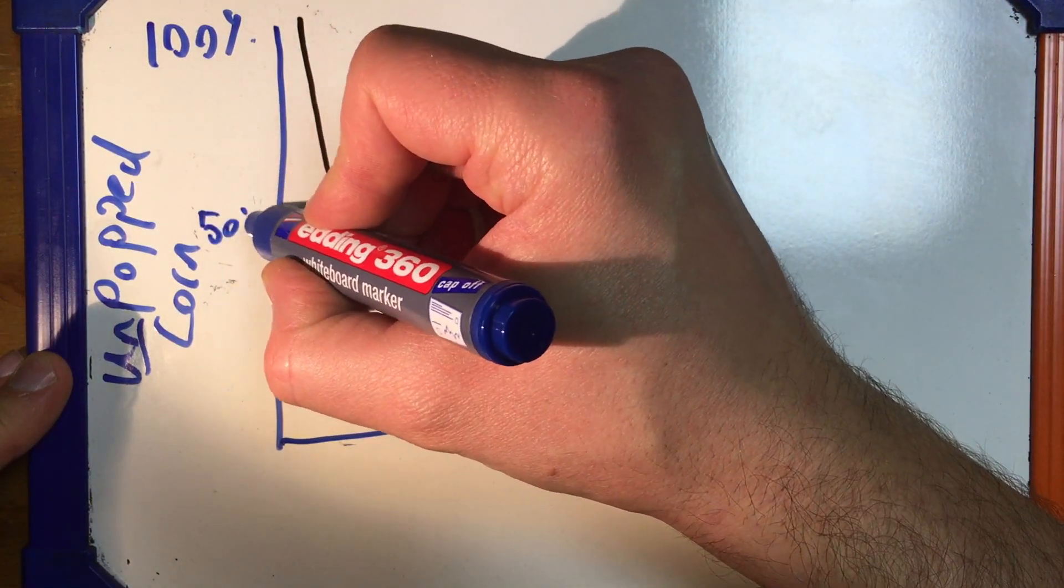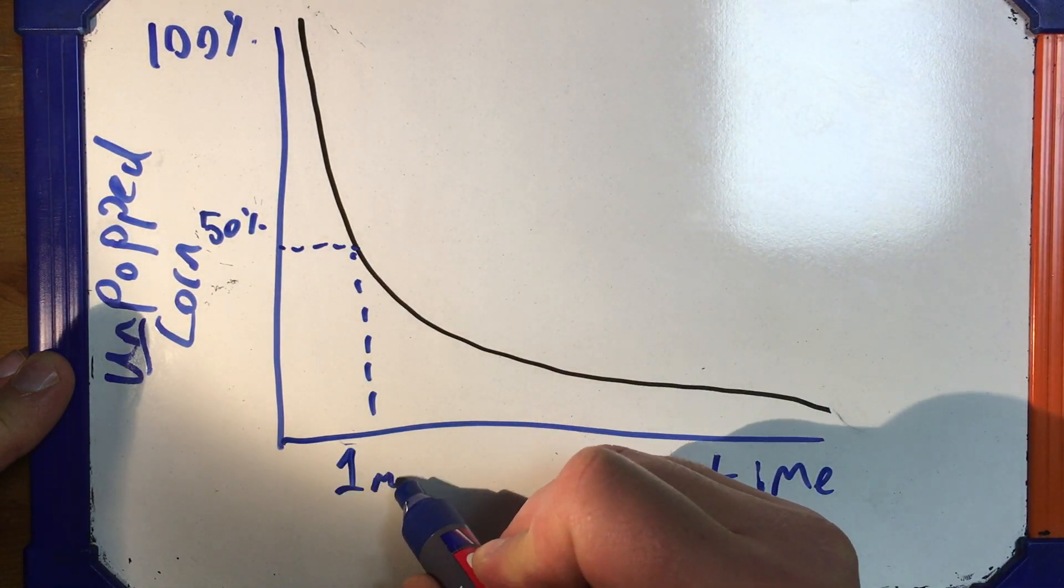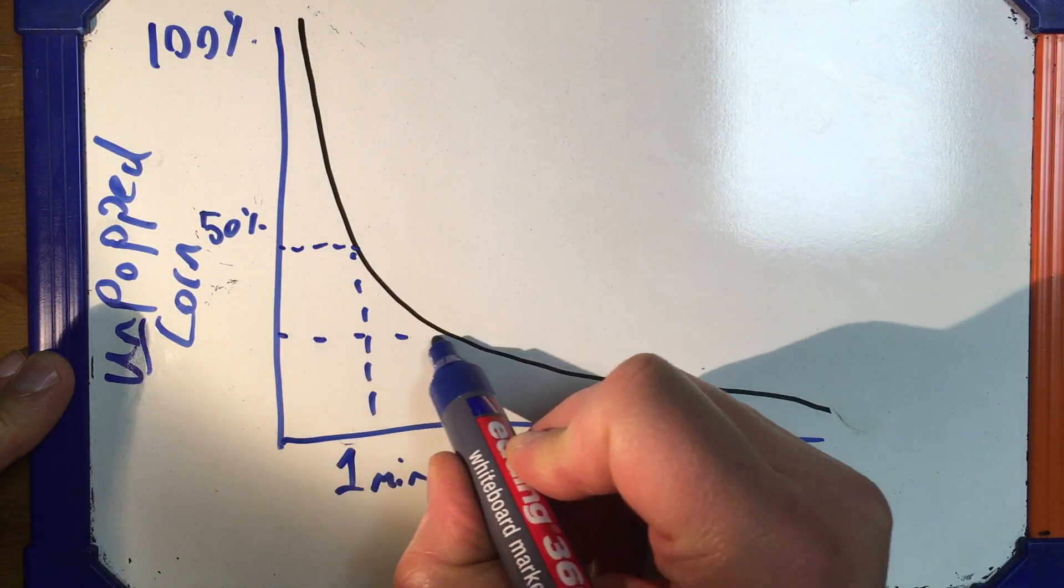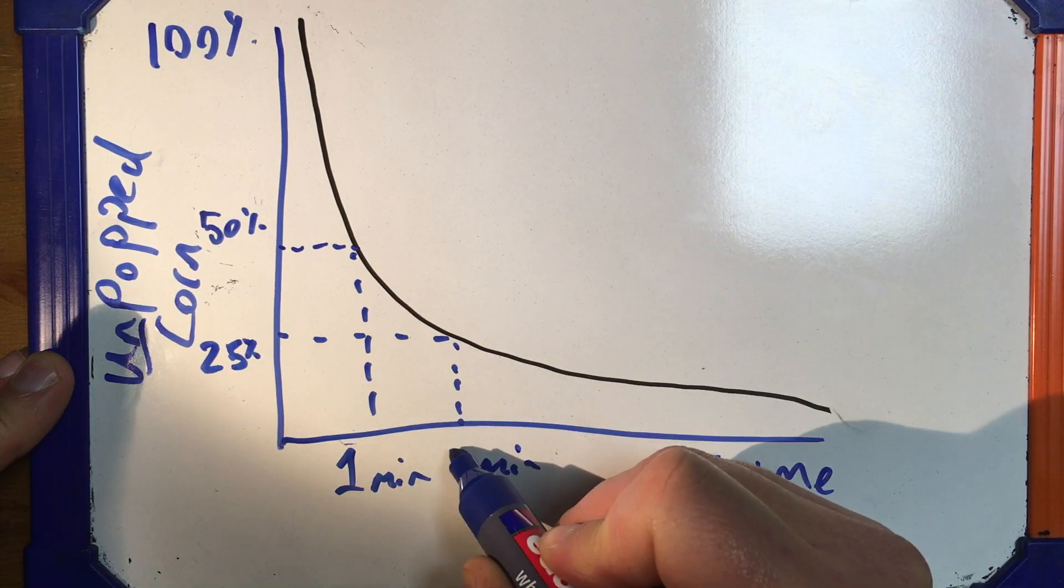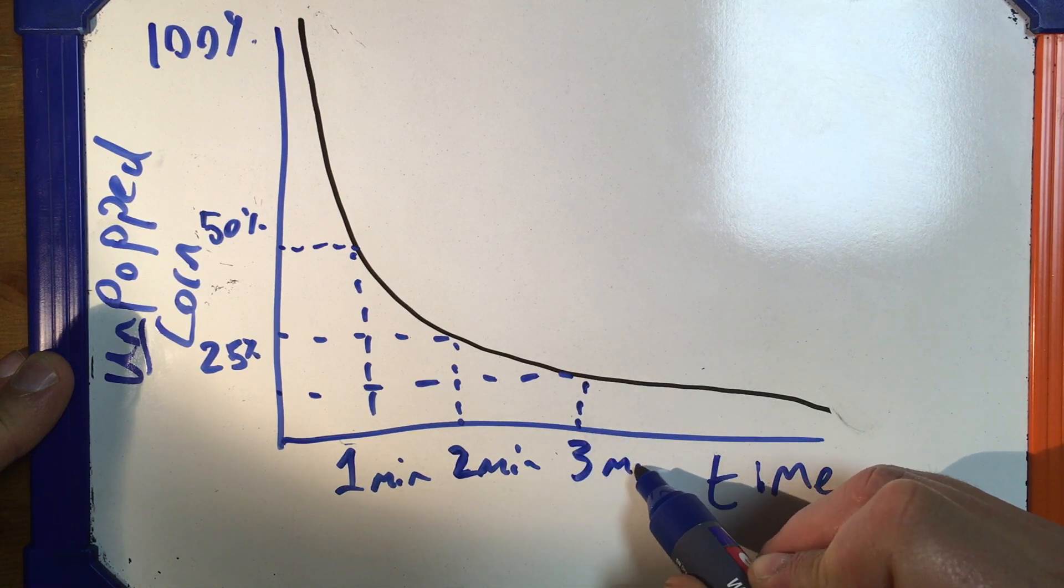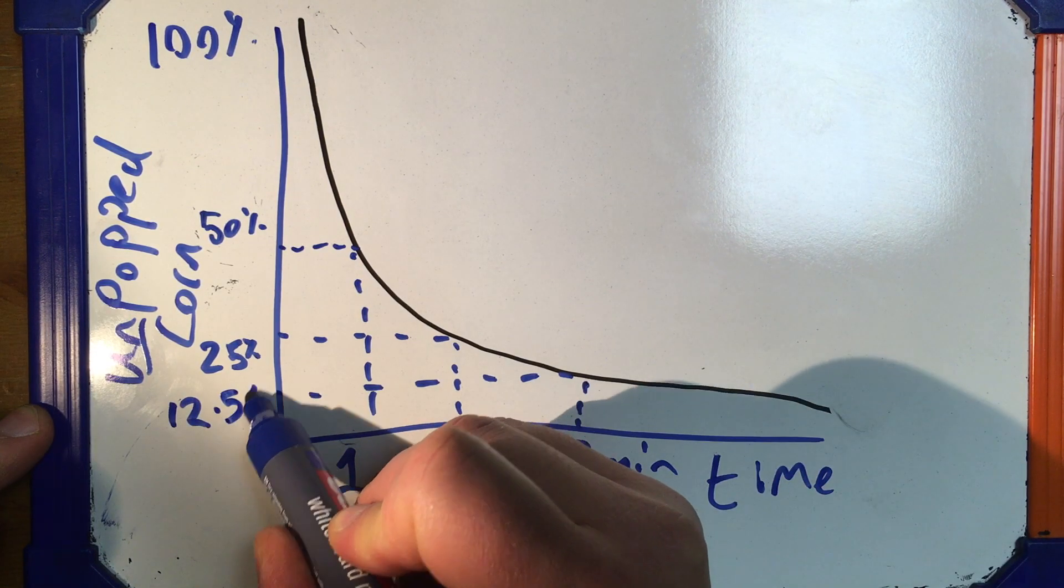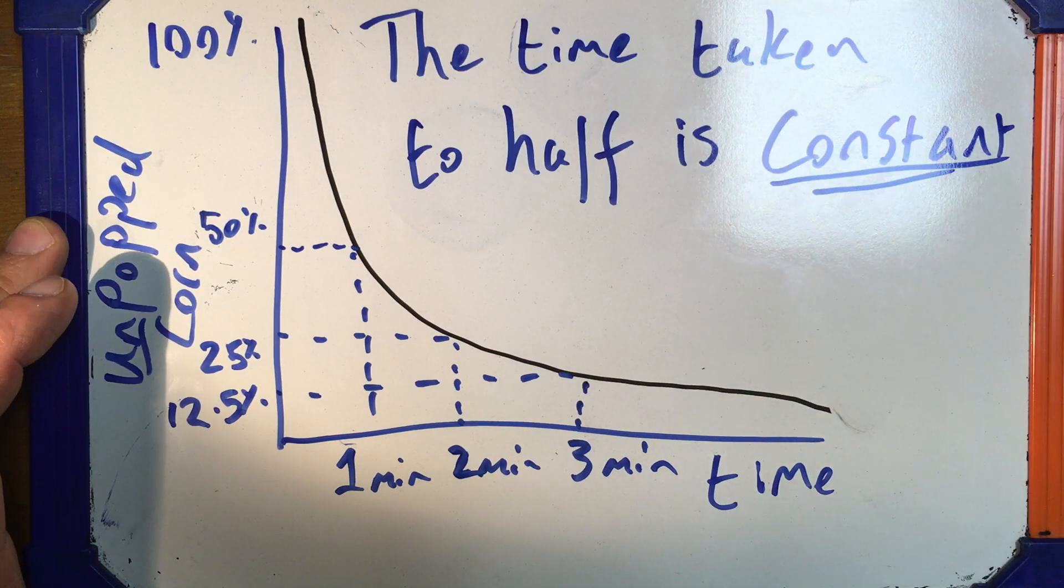If we take a closer look at the graph, we can find out that to cook half of our popcorn took one minute. To cook the next half that's left took one more minute. And to cook the next half that was left after that took one more minute again. So we find that the time taken to cook half of your popcorn has a constant value. We call this value the half-life.